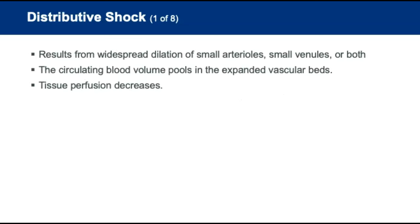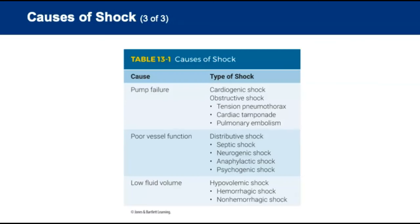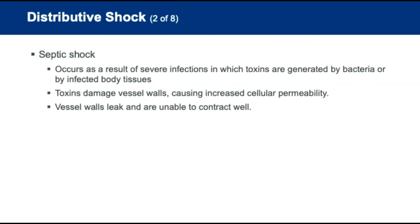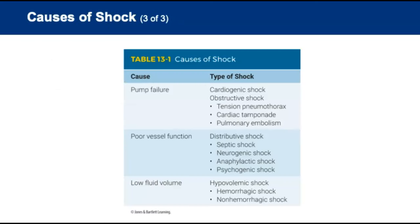Distributive shock results from a problem with the vessels — the tubes of the cardiovascular system. It occurs when there is widespread dilation of small arterioles, venules, or both, causing blood to pool into expanded vascular beds and decreasing tissue perfusion. The four types of distributive shock are septic, neurogenic, anaphylactic, and psychogenic.